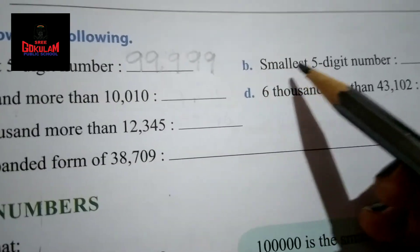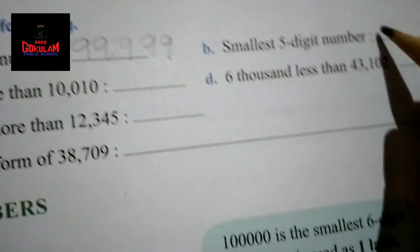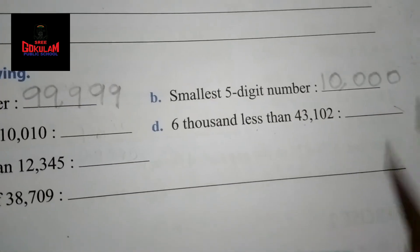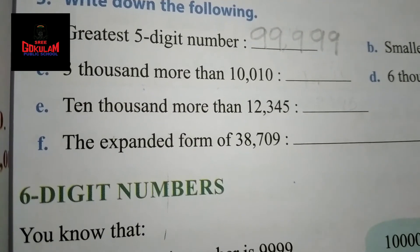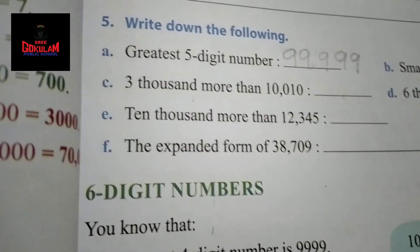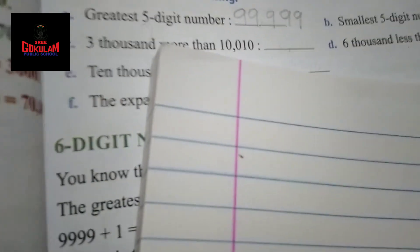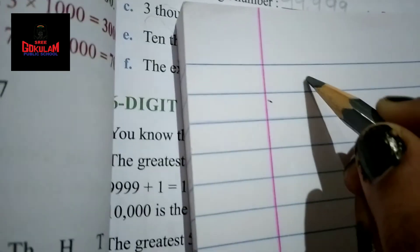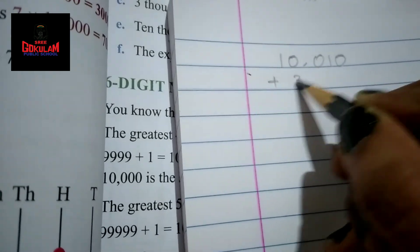Question number B: The smallest 5-digit number. The smallest 5-digit number is 10,000. Next question: 3,000 more than 10,010. More means we have to add. That means we have to add 3,000 with 10,010. That means 10,010 plus 3,000.